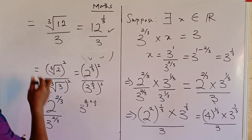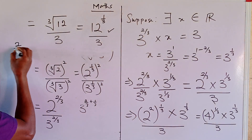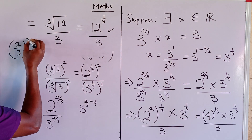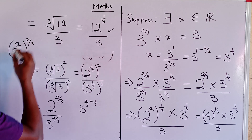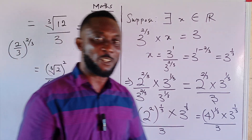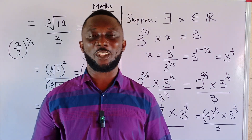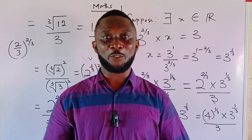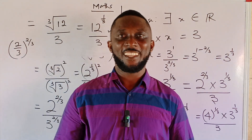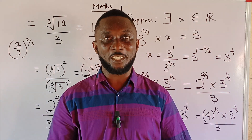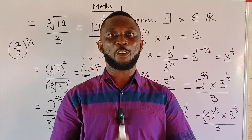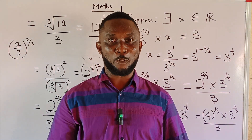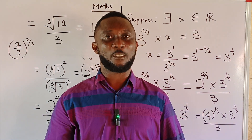So the final answer is the cube root of 12 divided by 3. If you're curious, you can verify by plugging the cube root of 12 divided by 3 into a calculator — it will give the same value as (2/3)^(2/3). We've come to the end of this tutorial. Please give this video a like, share it with your learning friends and colleagues, leave your comments, and follow for more. See you next time, God bless you.